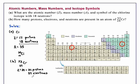And the number of neutrons is the difference between the mass number A and the atomic number Z. So, this is 52 minus 24, and that equals 28 neutrons.